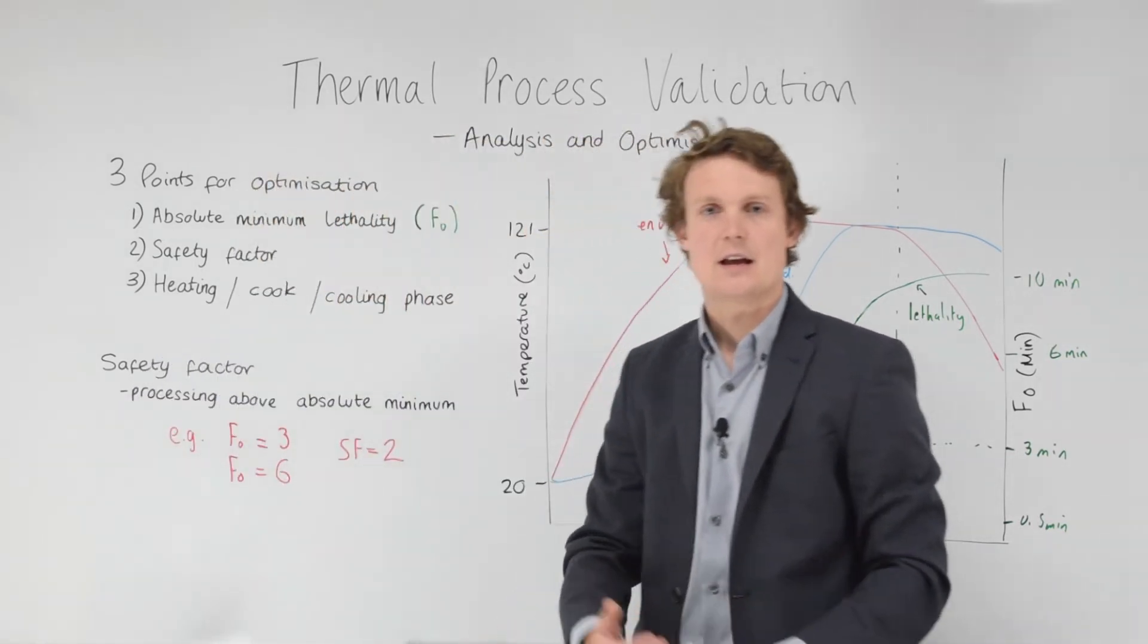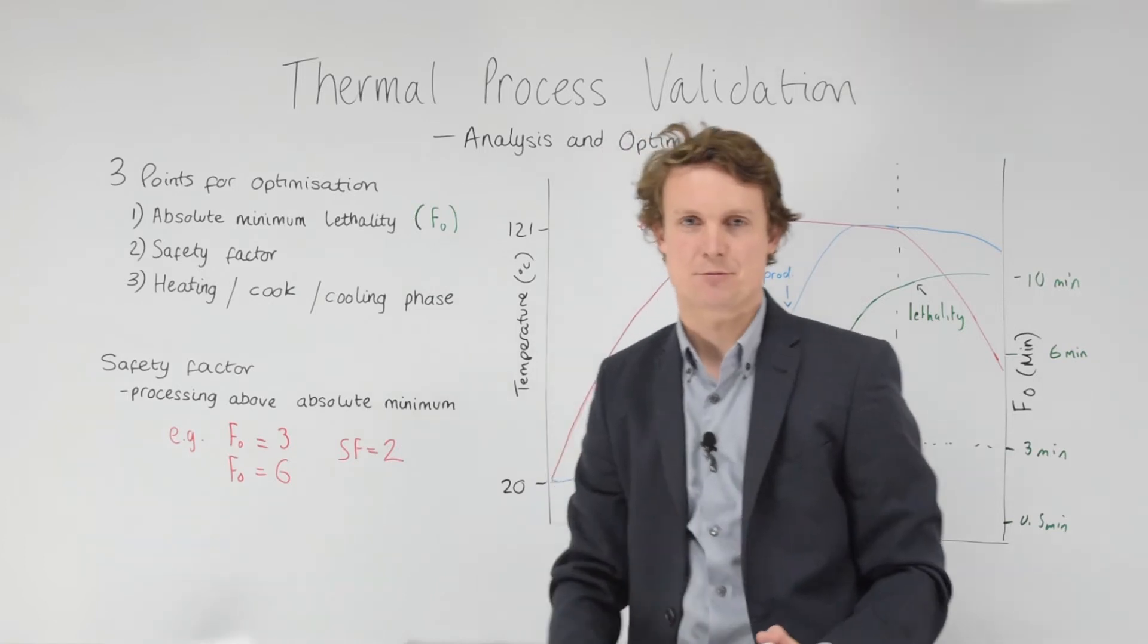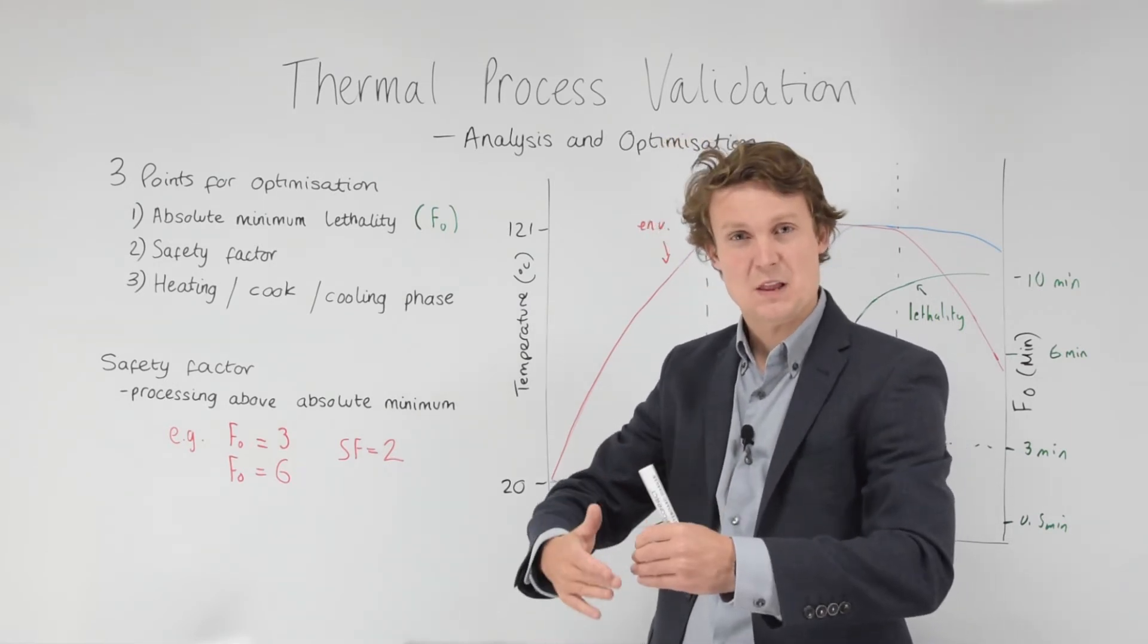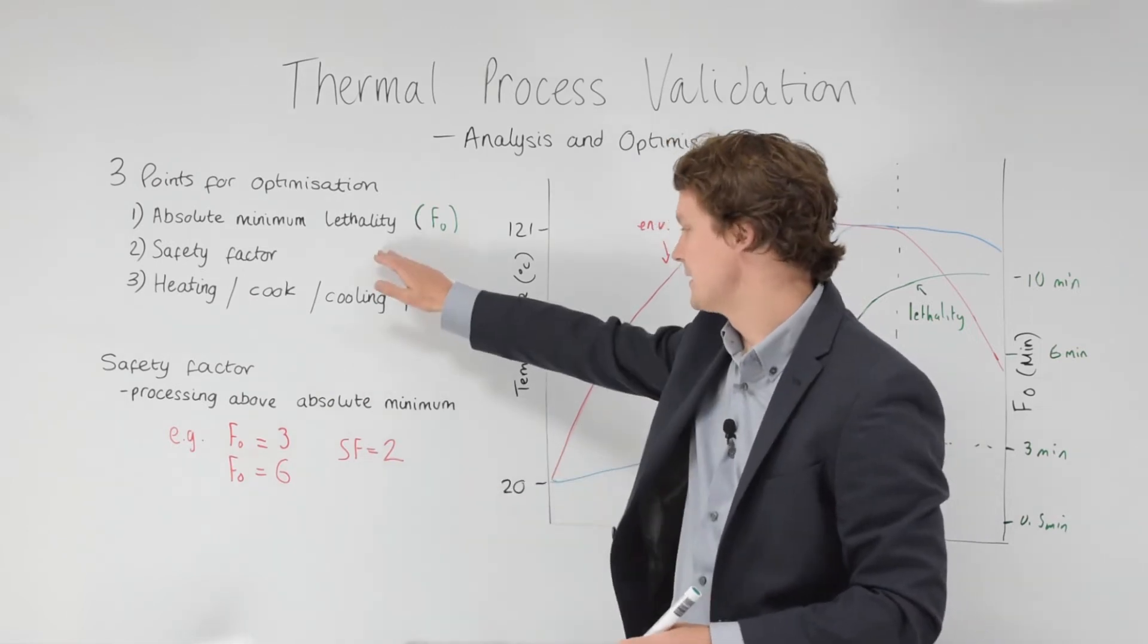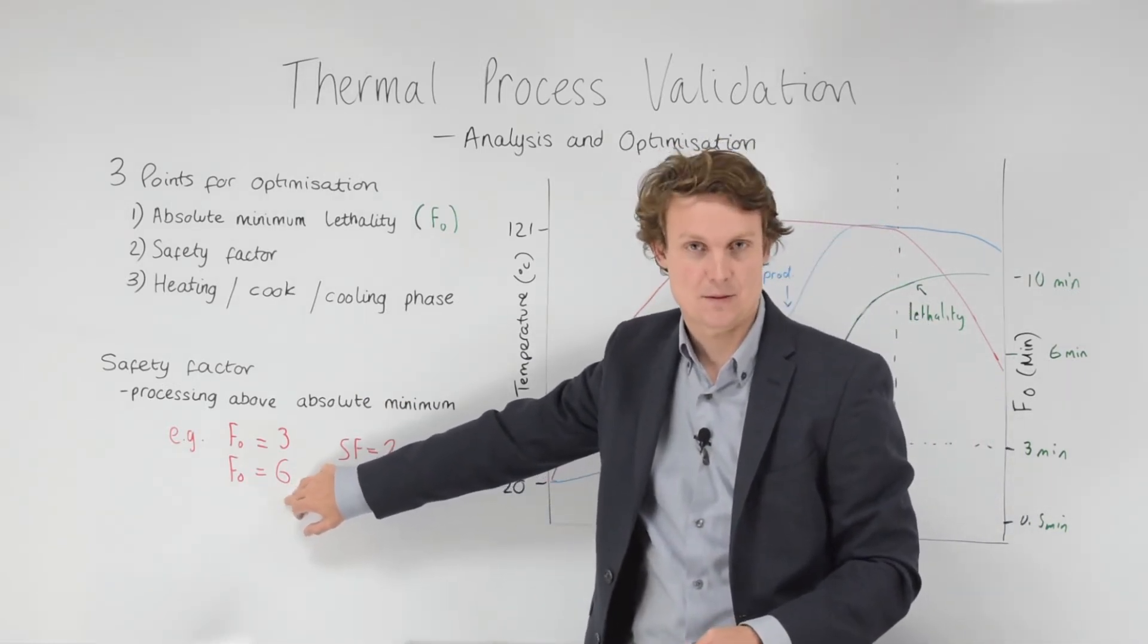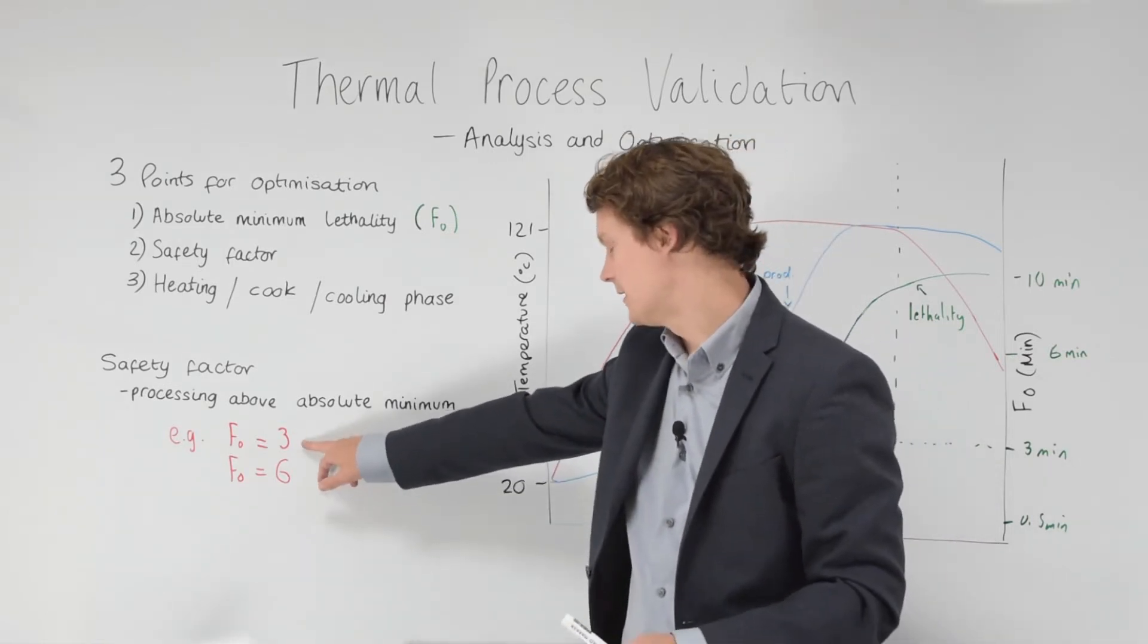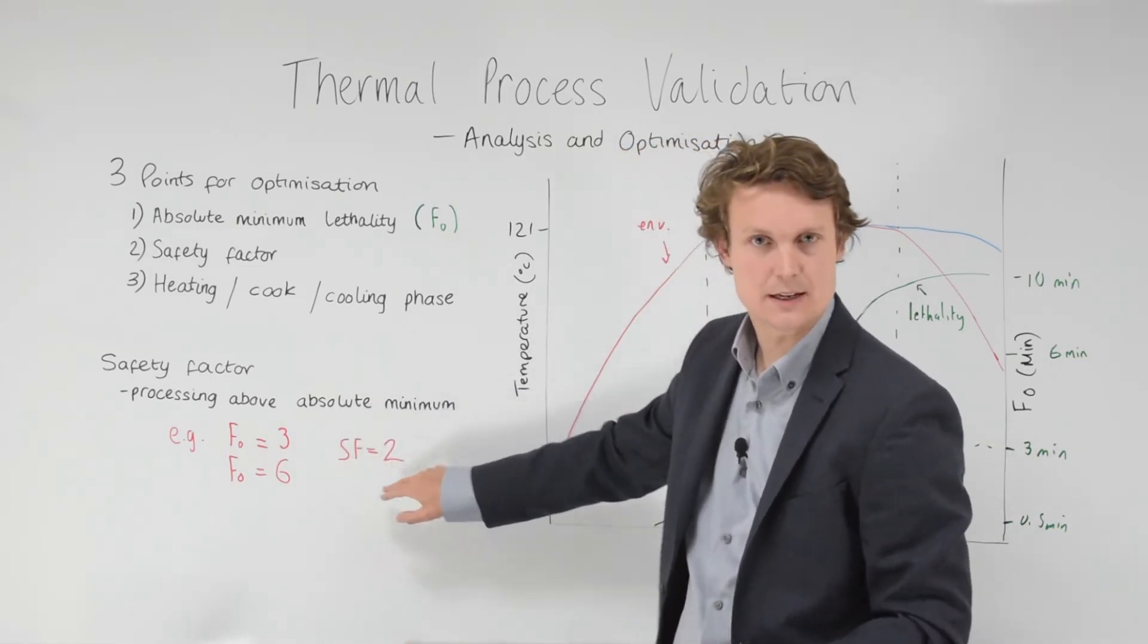But we also need to understand a safety factor. This safety factor depends on the process and the product. It is something based essentially on a risk assessment. It is the amount of lethality we want to actually achieve divided by what our absolute minimum is. In this example, let's say we want to get a target of six minutes. That's our in-house manufactured target for this product. But it is a sterilization process and we know the absolute minimum is three minutes. So six over three gives you two. SF, safety factor equals two.